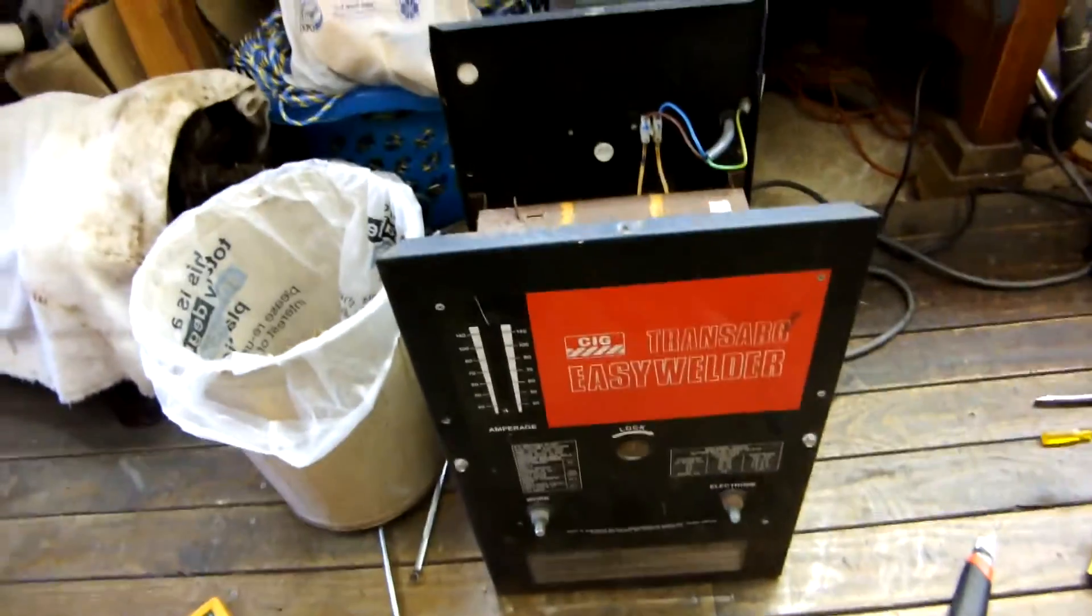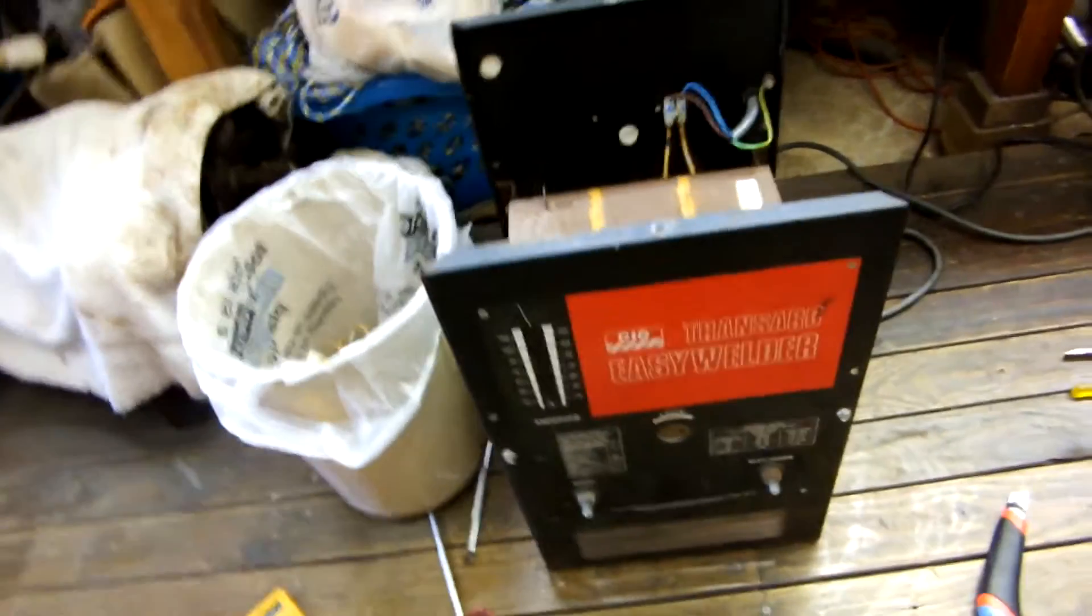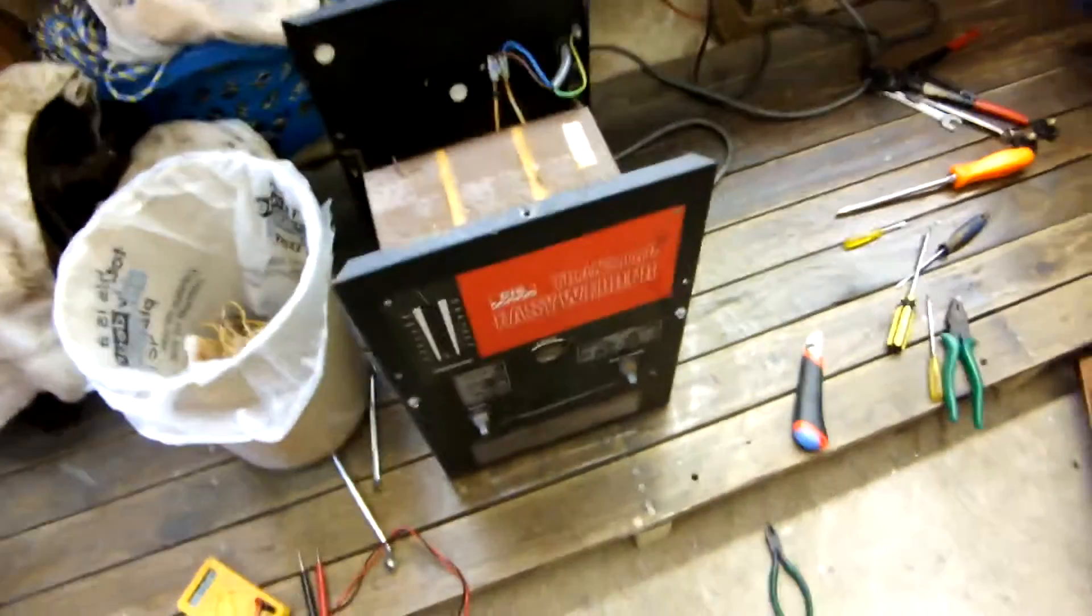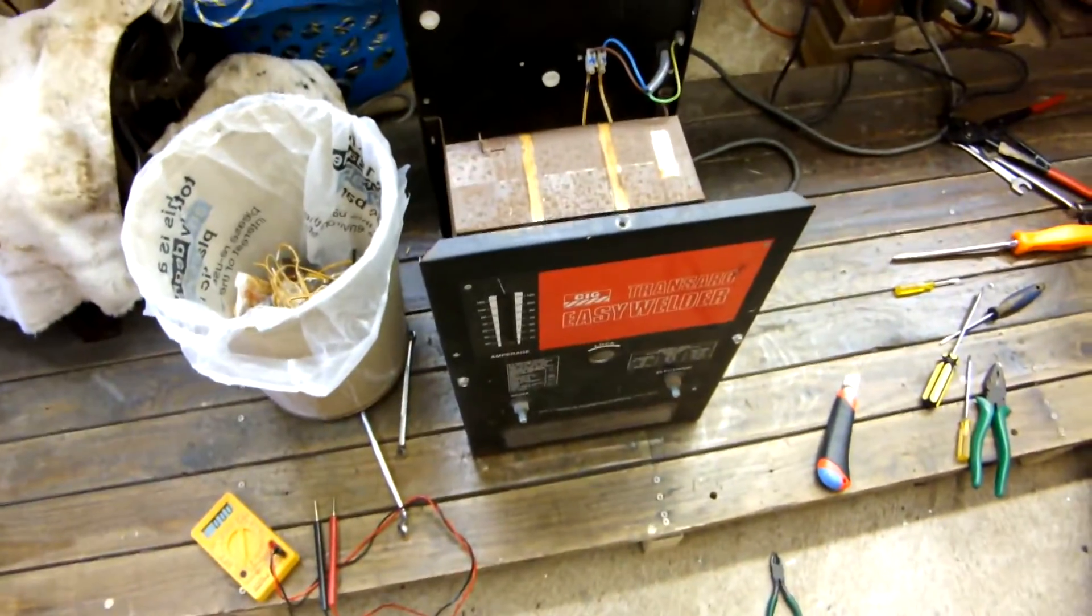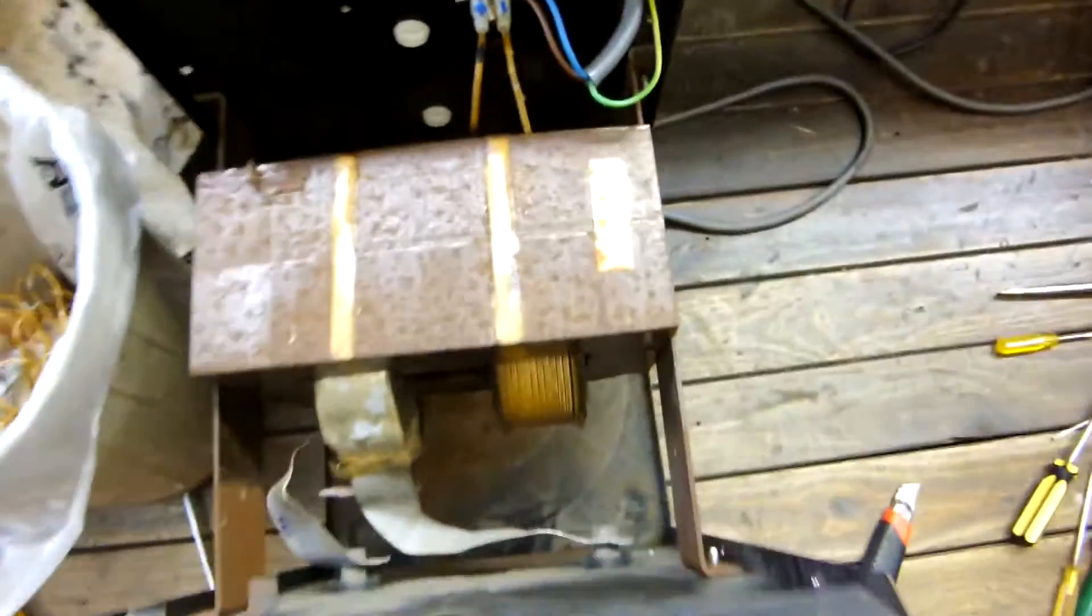Okay, I've got this other welder that wouldn't quite deliver the 65 amps I was after. It was only giving about 55. So what I've done is I've taken windings off the primary coil.